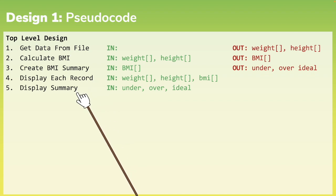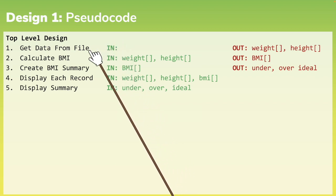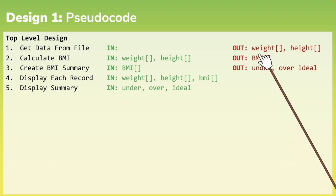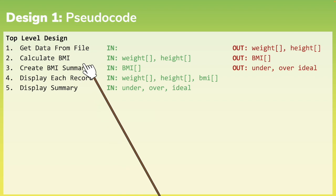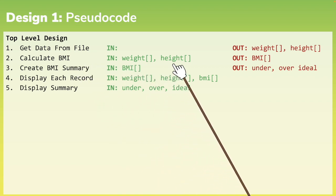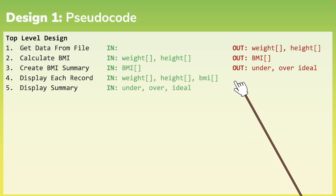These top level elements will form the main sub-programmes within our programme. Each of these sub-programmes will either receive data from the rest of the programme or send data to the rest of the programme. This is where our data flow comes in. 'In' refers to any values that our specified sub-programme requires from elsewhere, and 'out' is any data that our sub-programme sends to the main programme. For example, getDataFromFile returns a weight array and a height array to the main programme. In order for calculateBMI to work, it requires the weight and height arrays and returns a BMI array. The display each record sub-programme requires the weight, height and BMI arrays but does not return any values to the main programme.